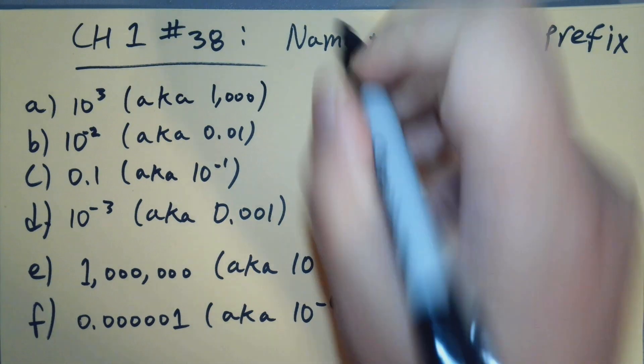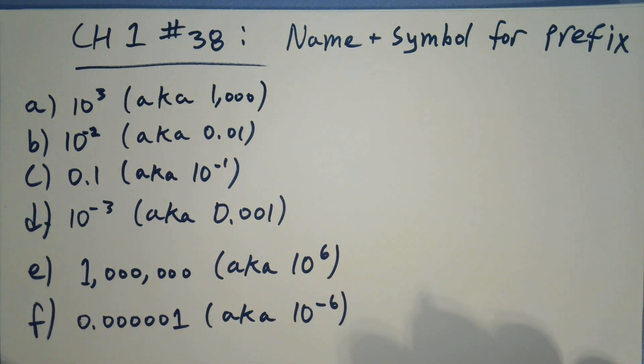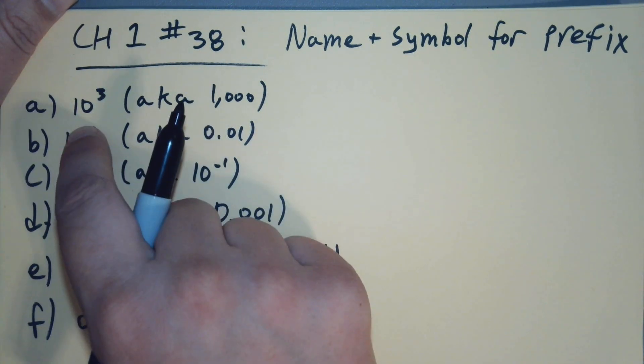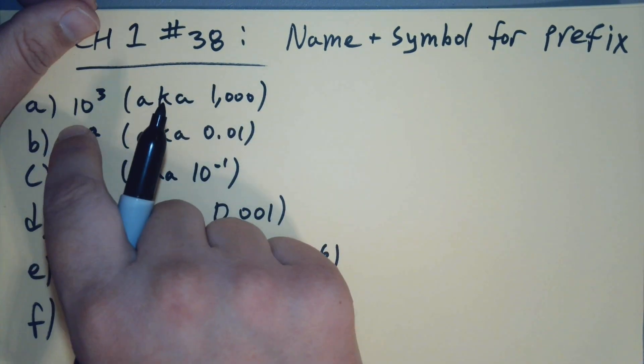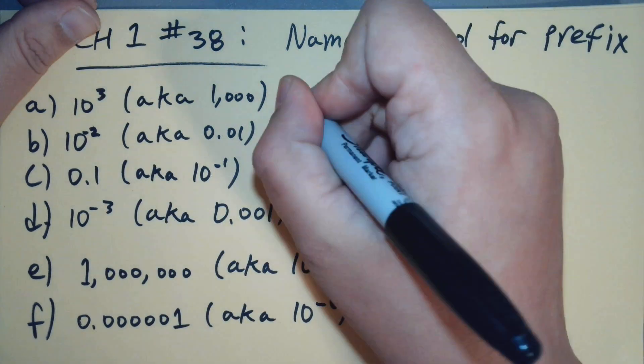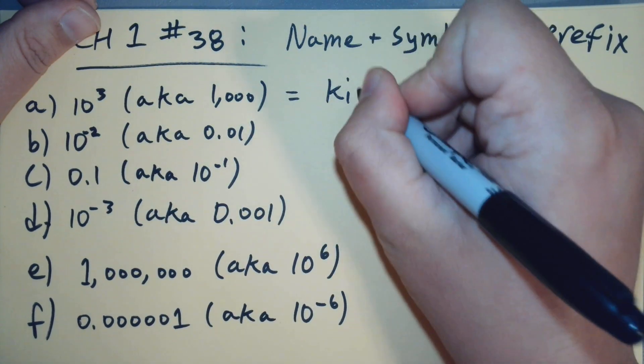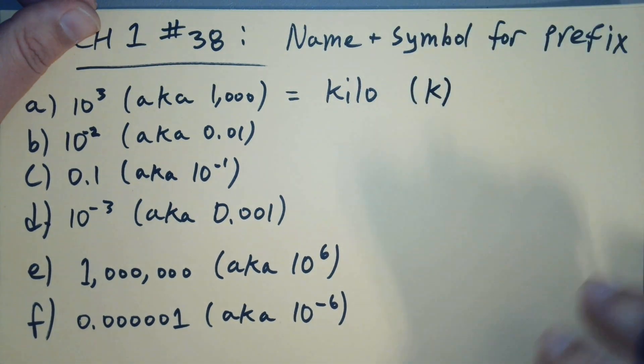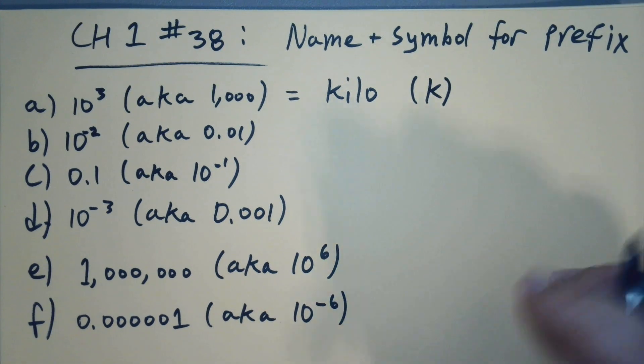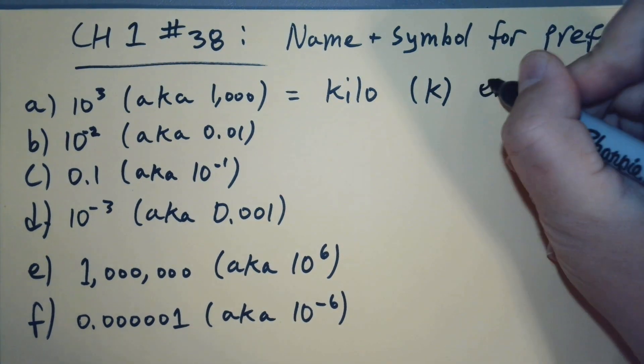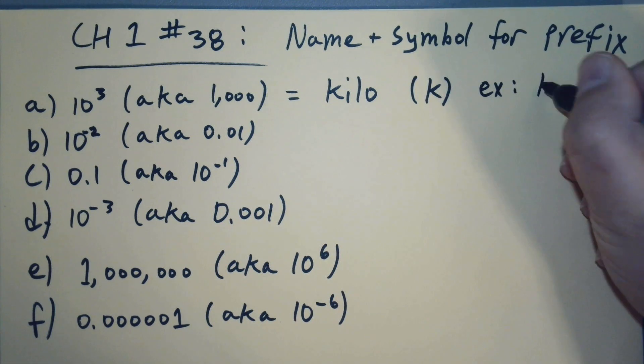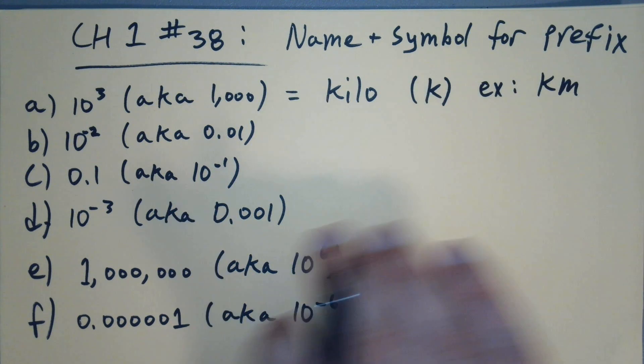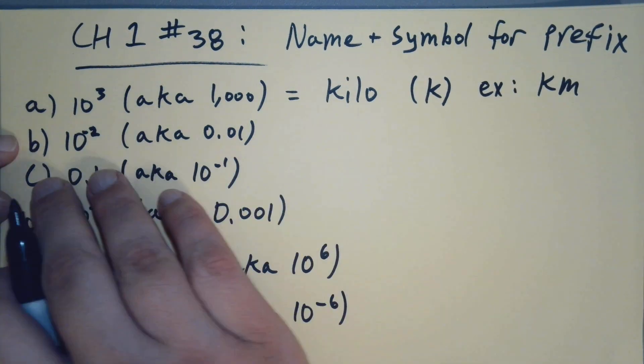I missed the first one there. So if we have 10 to the 3, that's 1,000. So if we have 1,000 of something, like if we had 1,000 meters, well that would be a kilometer. So kilo would be the prefix, and then the letter for it would just be K. Our symbol is K. For example, kilometers—kilo meters—kilometers.